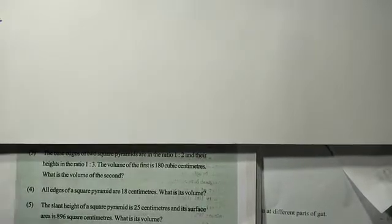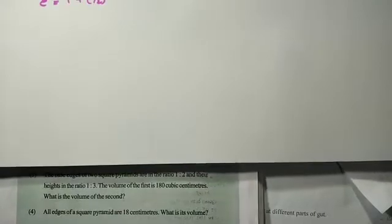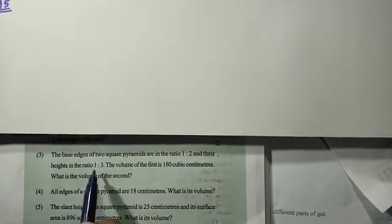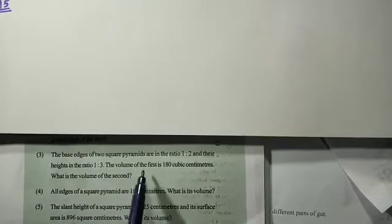Page number 905. The base edges of two square pyramids are in the ratio 1:2 and their heights in the ratio 1:3. The volume of the first pyramid is 180 cubic centimeters. What is the volume of the second?